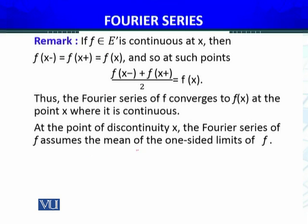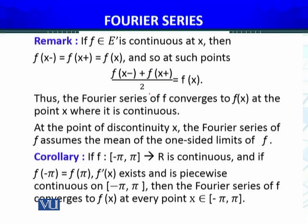At the point of discontinuity X, the Fourier series of F assumes the mean of the one-sided limits of F — that is, [F(x⁻) + F(x⁺)] / 2 — which is divided by two, that's why we say it is the mean.